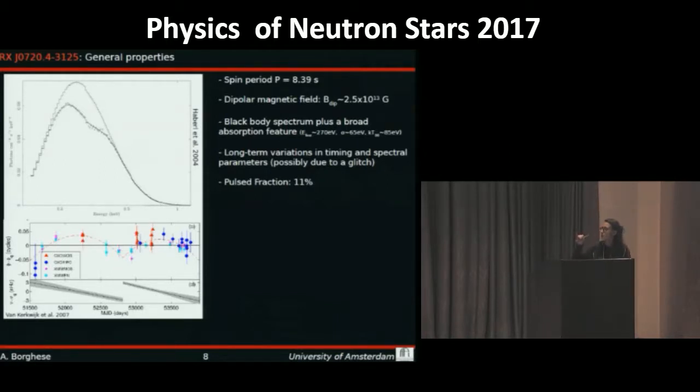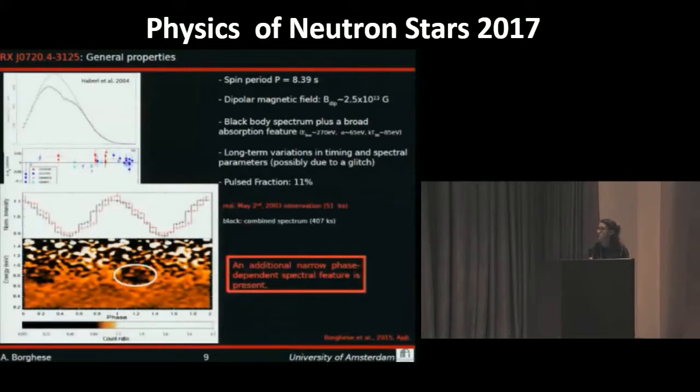In panel D we have the residual in spin frequency between a simple spin-down model and a glitch model, and there is this jump that is possibly due to a glitch. So we built the energy versus phase image for the longest XMM-Newton observation and we noticed this feature that is present in this restricted phase bin.